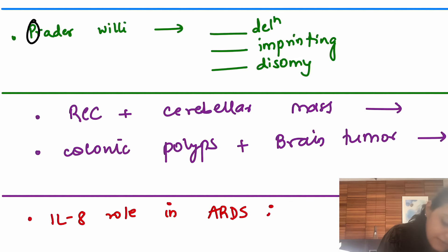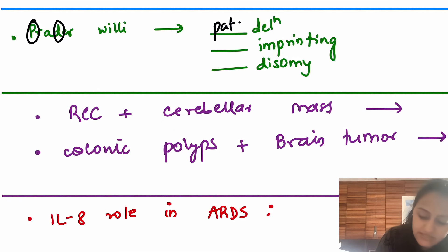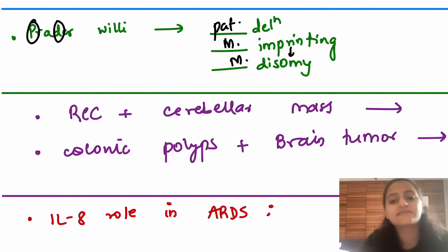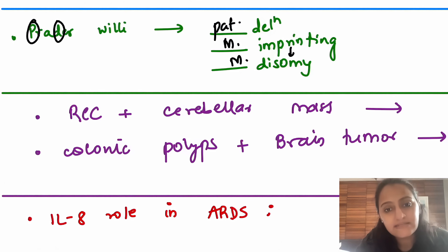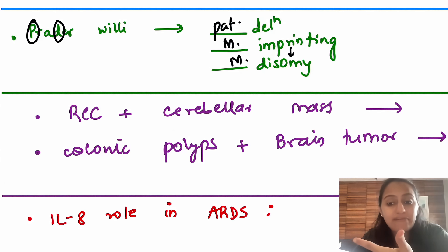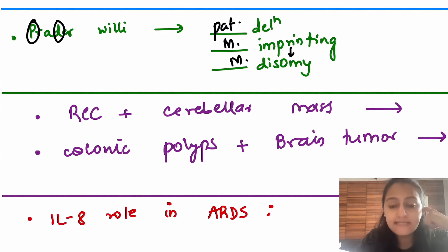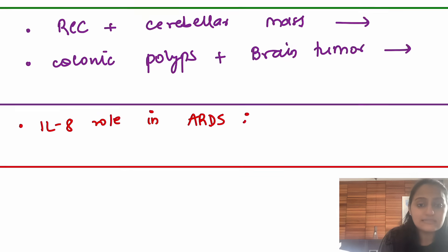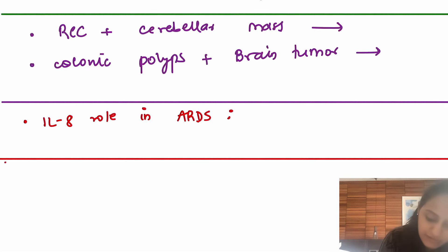Prader-Willi syndrome involves paternal deletion with maternal disomy — opposite is Angelman syndrome. These are disorders of genomic imprinting on chromosome 15. Mnemonic: the family on chromosome 15 — father is Prader-Willi, mother is Angelman, tall son is Marfan, and fair daughter is albinism. These conditions are all on chromosome 15.